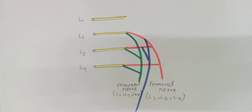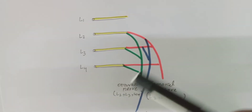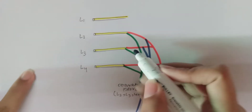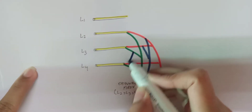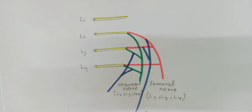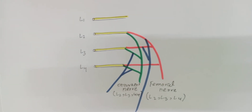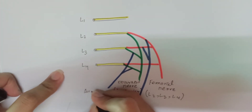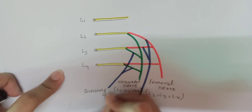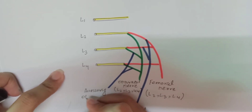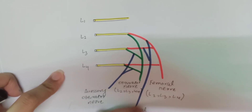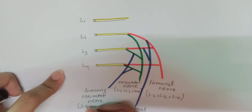From the ventral divisions of L3 and L4, there comes a nerve known as the accessory obturator nerve. Its root values are L3 and L4.